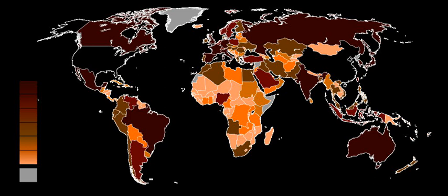GDP per capita does not, however, reflect differences in the cost of living and the inflation rates of the countries. Therefore, using a basis of GDP per capita at purchasing power parity is arguably more useful when comparing differences in living standards between nations.